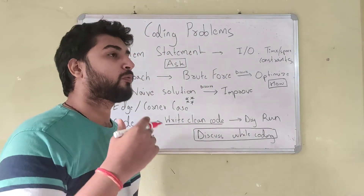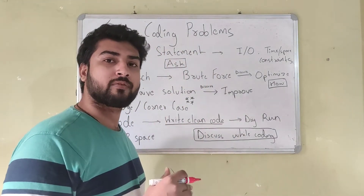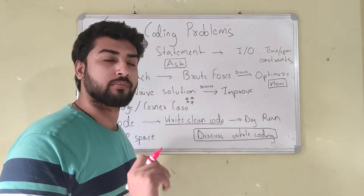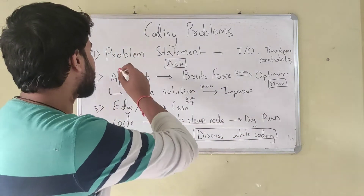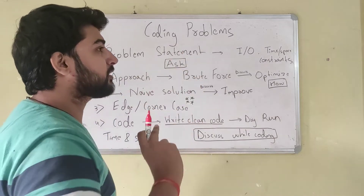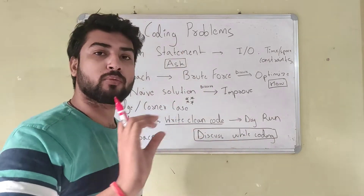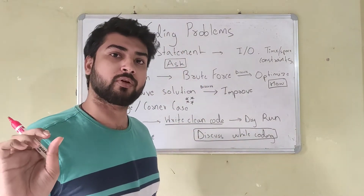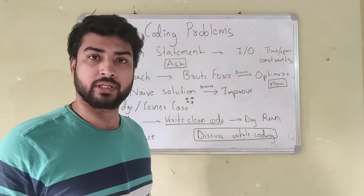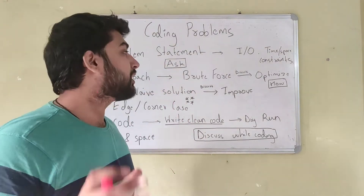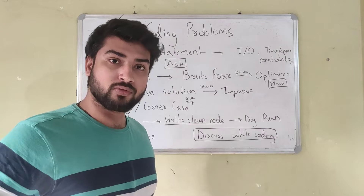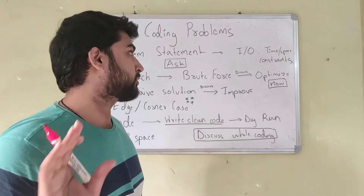When you're given a problem in a coding interview, the first thing is a problem statement. The interviewer will either copy a problem statement and put it in a text editor in front of you, or say the problem statement verbally. If he says it verbally, write it down somewhere. If he's copying it, then no issues.